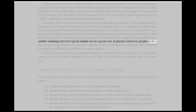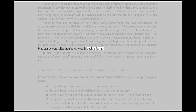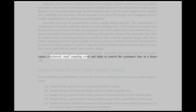A large-sized sample increases the cost of collecting data and also enhances the systematic bias. Thus the effective way to increase precision is usually to select a better sampling design which has a smaller sampling error for a given sample size at a given cost. In practice, however, people prefer a less precise design because it is easier to adopt and also because systematic bias can be controlled in a better way in such a design. In brief, while selecting a sampling procedure, the researcher must ensure that the procedure causes a relatively small sampling error and helps to control the systematic bias in a better way.